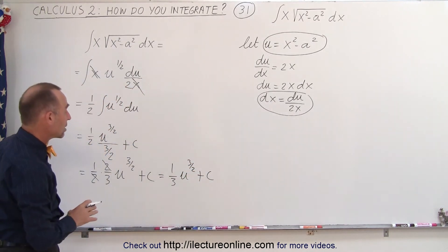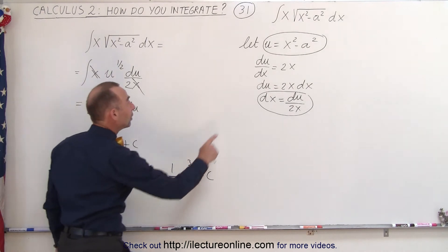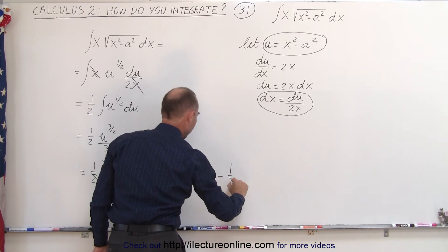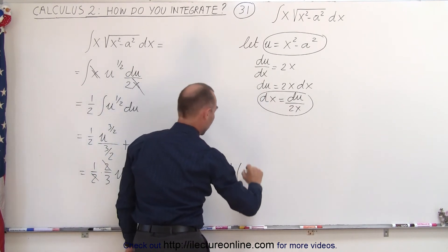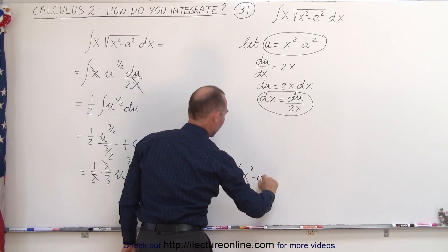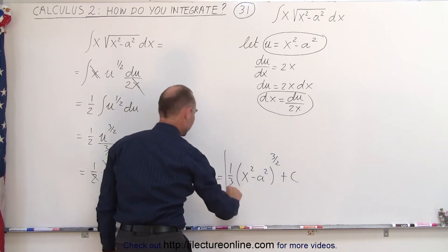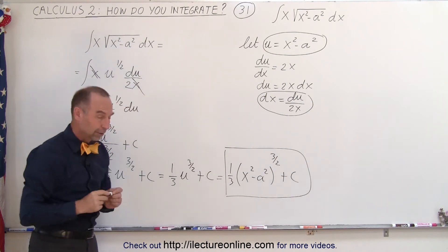Now all we have to do here is realize that u is equal to what's inside, what's up there, so we can then say that this is equal to 1 third times x squared minus a squared to the 3 halves power, plus a constant of integration, which then becomes the solution to our integral.